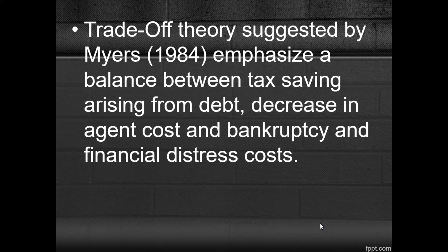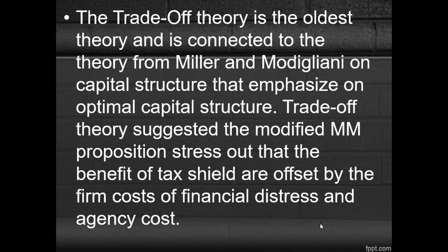Trade-off theory, suggested by Myers in 1984, emphasizes the balance between tax savings arising from debt, decreasing agency costs, and the bankruptcy and financial distress costs. The trade-off theory is one of the oldest theories and it is connected to the theory of Miller and Modigliani on capital structure, which emphasizes the optimal capital structure.